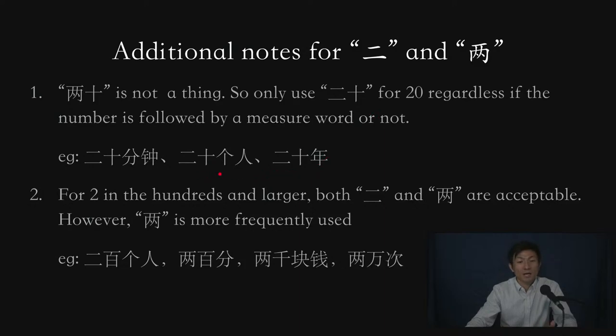Same thing, we would say 两个人, but for 20 people, we would say 二十个人. Two years, it would be 两年, and 20 years, it's going to become 二十年.